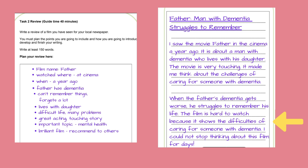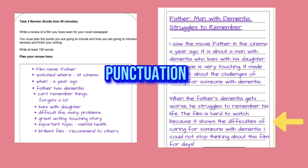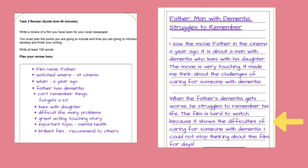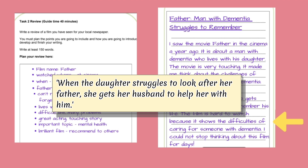We start the second paragraph with complex sentences — though there's actually nothing complex about them at all. 'When the father's dementia gets worse, he struggles to remember his life. The film is hard to watch because it shows the difficulties of caring for someone with dementia. I could not stop thinking about the film for days!' I've used 'when' in the first sentence and 'because' to give more information in the second. You need to show different types of punctuation like an exclamation mark. You can use the same structure: 'When the daughter struggles to look after her father, she gets her husband to help her.' Or: 'I really liked watching the film because I learned a lot about dementia.'